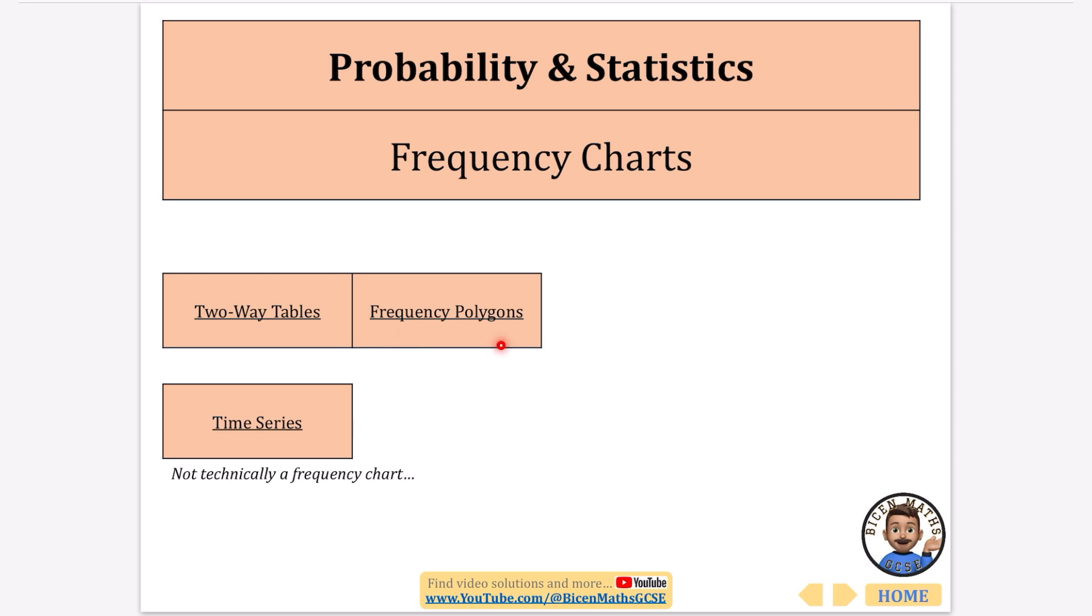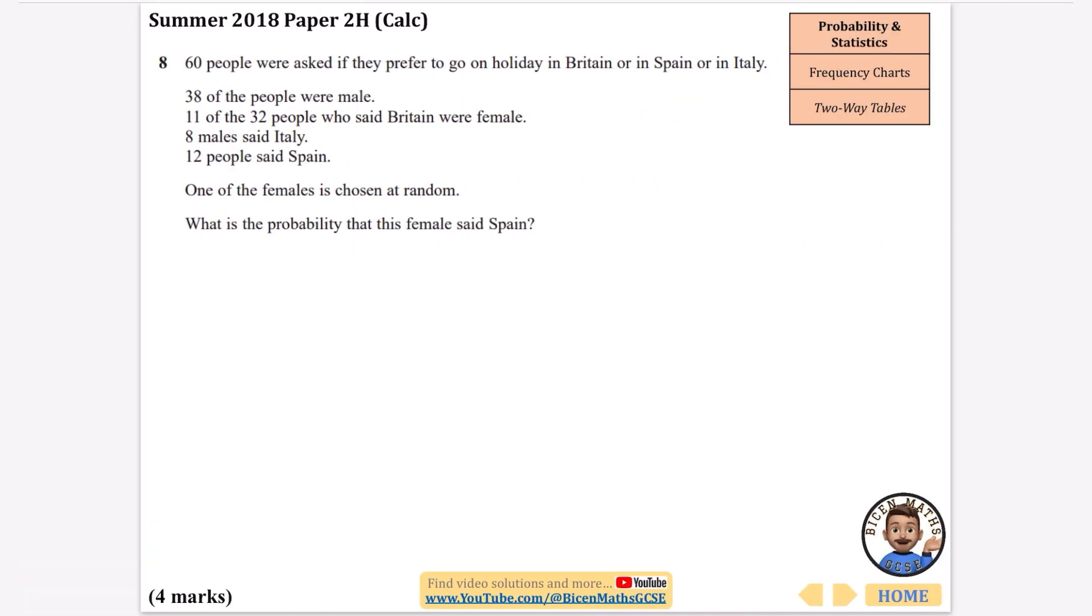So we're going to start with some stuff on two-way tables, we'll do some bits on frequency polygons as well. So this one says here that 60 people are asked if they prefer to go on holiday in Britain or in Spain or in Italy, and then they've got loads of different information about whether they are male or female.